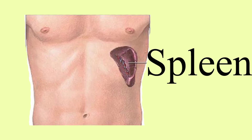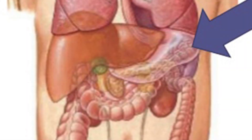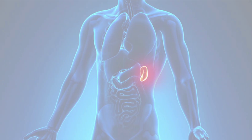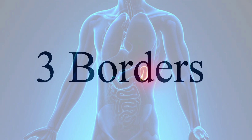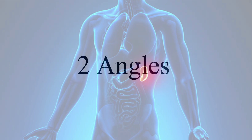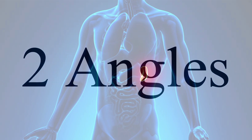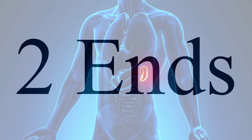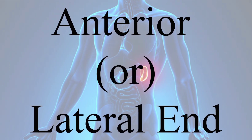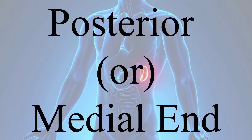The spleen is a wedge-shaped organ lying in the left hypochondrium and partly in the epigastrium. It is wedged between the fundus of the stomach and the diaphragm. The spleen has 2 ends: the anterior or lateral end, and the posterior or medial end.